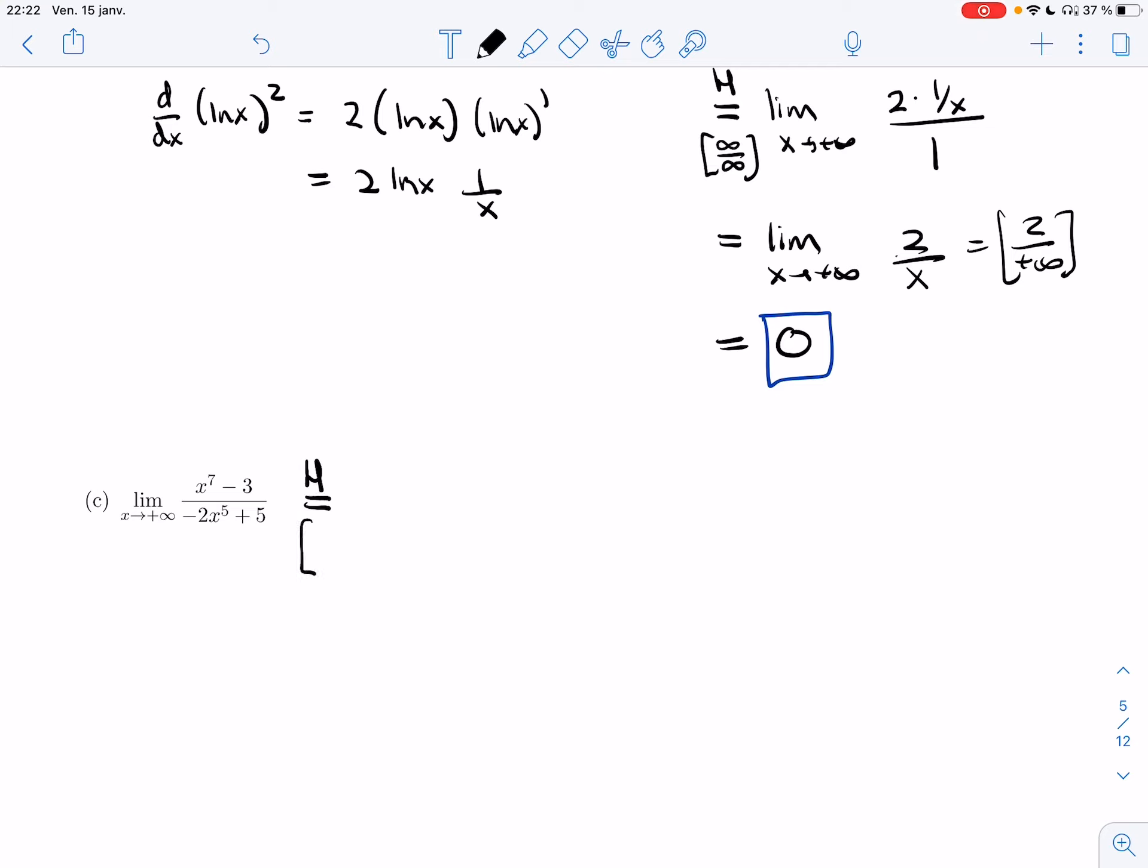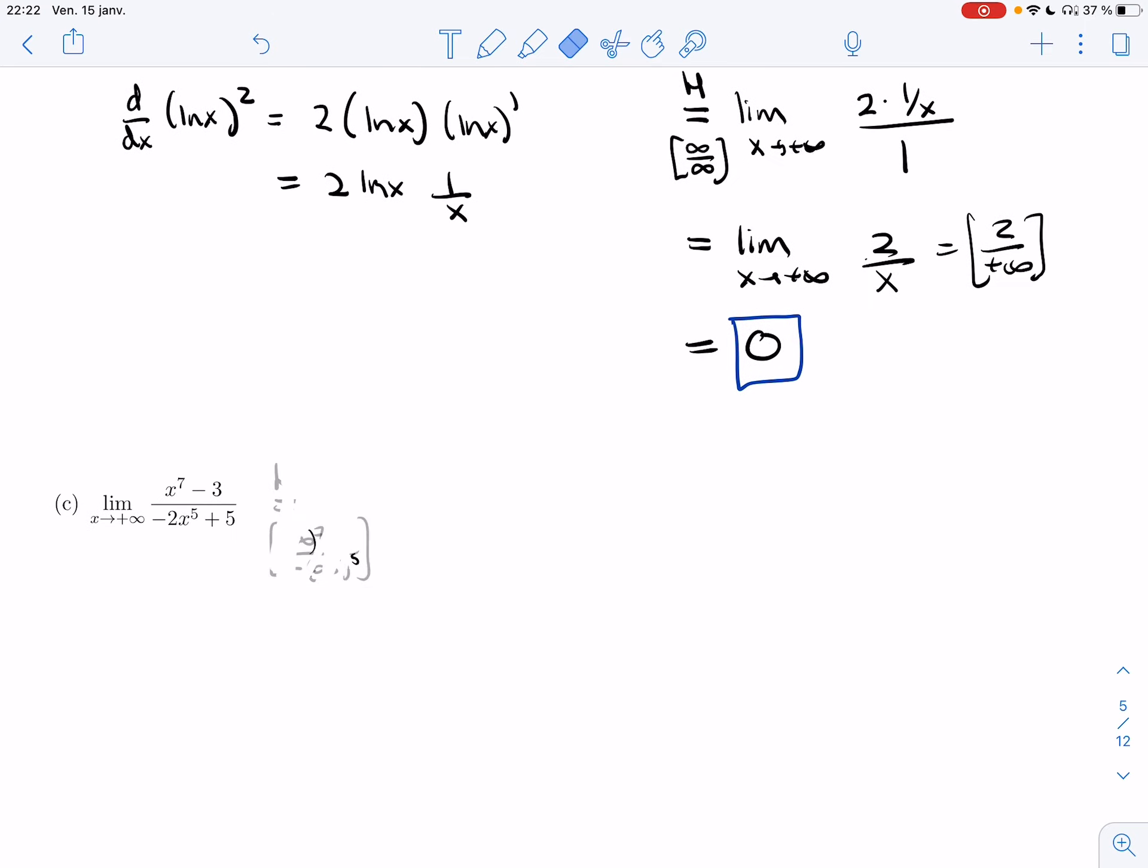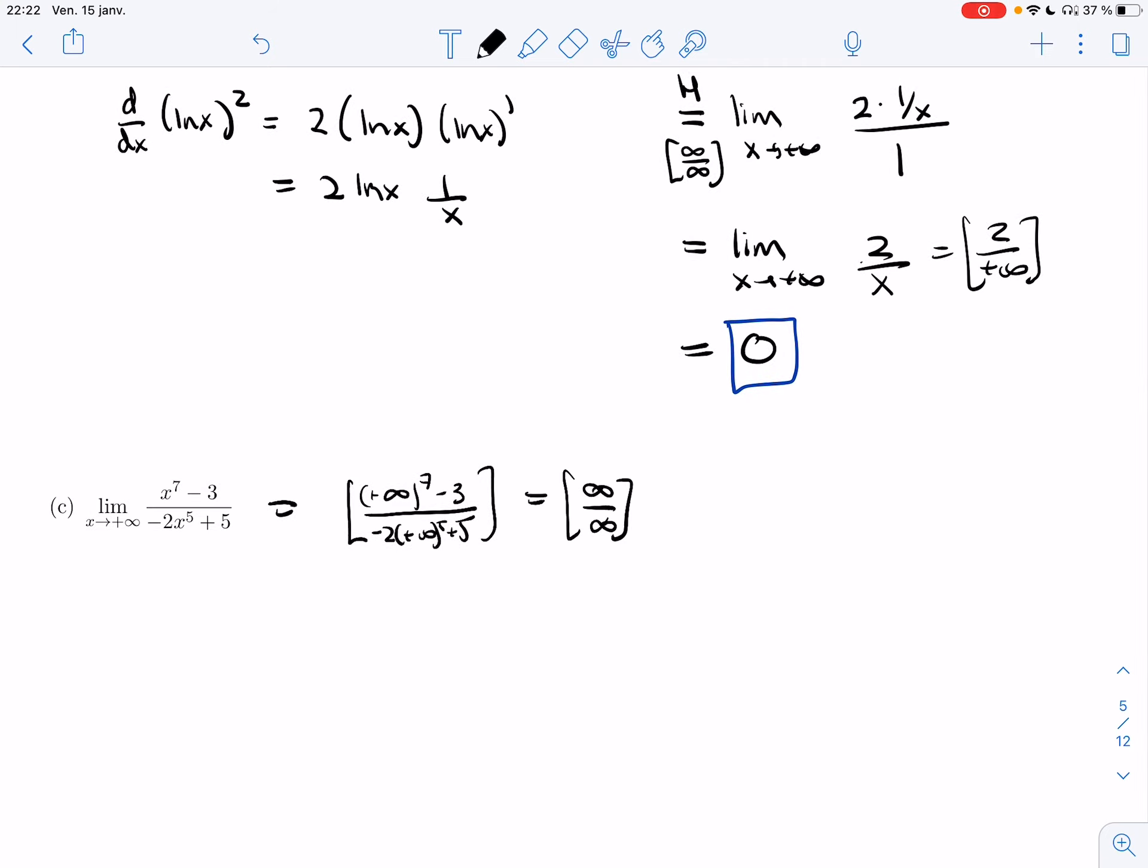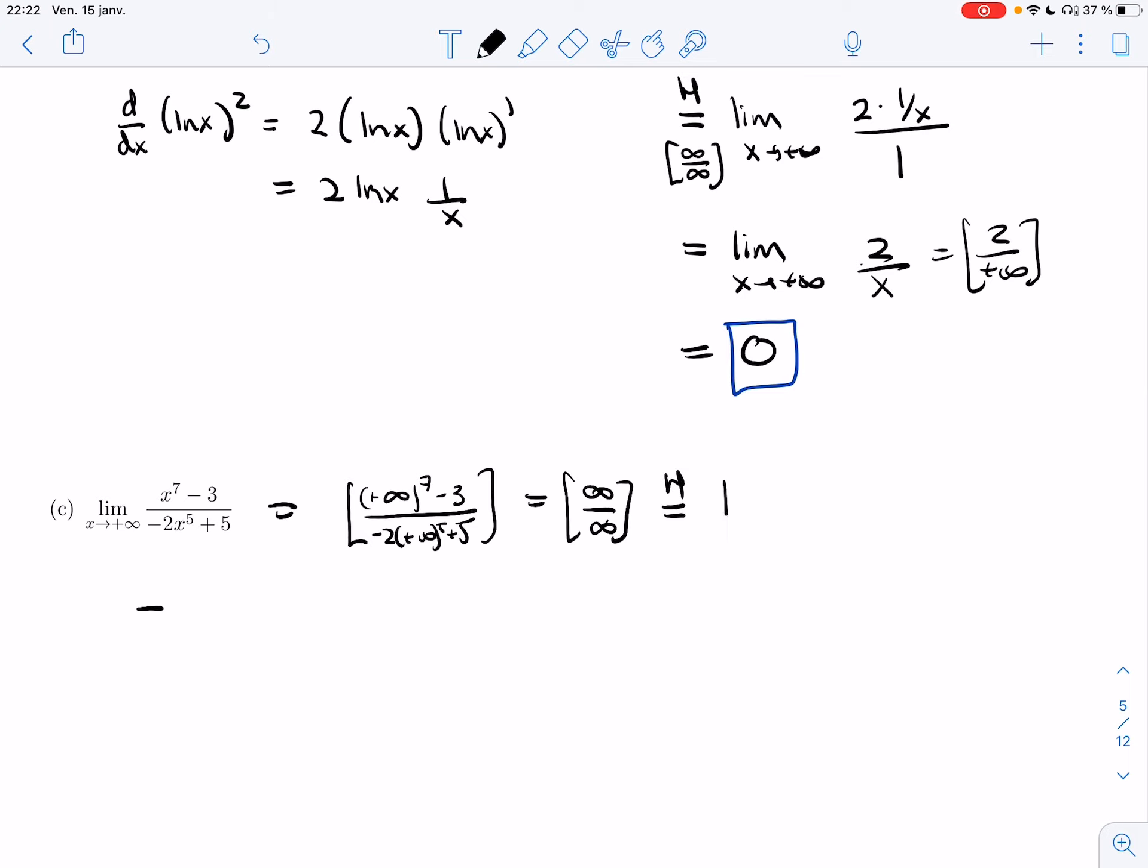I'm going to apply L'Hôpital because the top is infinity to the 7. The bottom is minus infinity to the 5. And so I'm getting infinity over infinity. If I'm evaluating it that way, I might as well write it out. So plus infinity to the 7 minus 3. The minus 3 is completely small compared to the infinity. And so it won't matter. And so here I'm getting infinity over infinity. I'm allowed to use L'Hôpital. I'm going to take the derivative of the top and derivative of the bottom. I'll get 7x to the 6 over minus 10x to the 4. Power rule. All right. At this point, if you plug it in, you still get infinity over infinity. And so you would be allowed to reapply L'Hôpital.